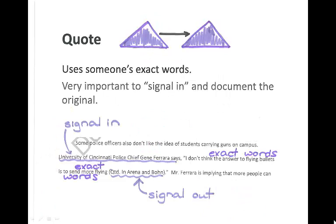Finally, we have quote — using someone's exact words in your essay set off by quotation marks. It's very important to signal in quotation marks because we don't want what's called dropped quotes in your essay — in other words, just quotes that have no context added to them. Notice how this student says exactly who's speaking, what makes him an expert, and provides some sort of documentation. Again, the student's not exactly perfect, but he does the job that he needs to pass.